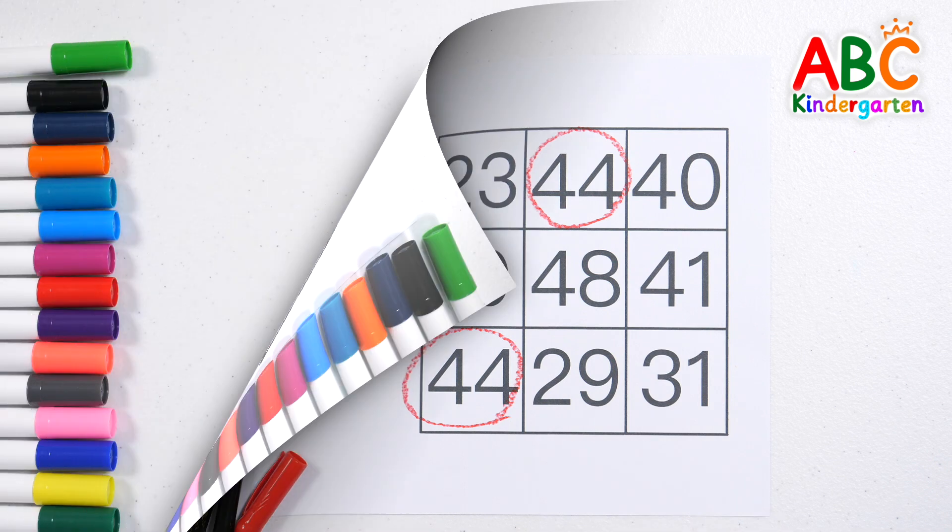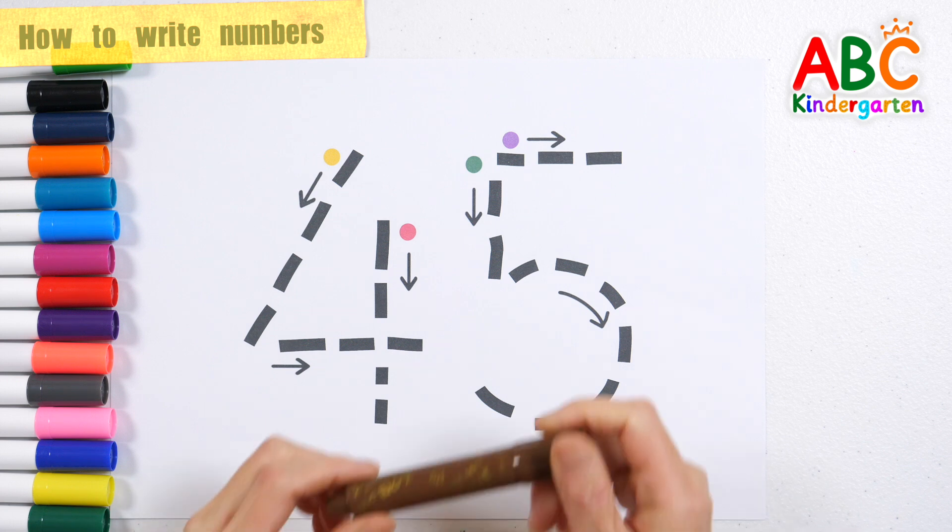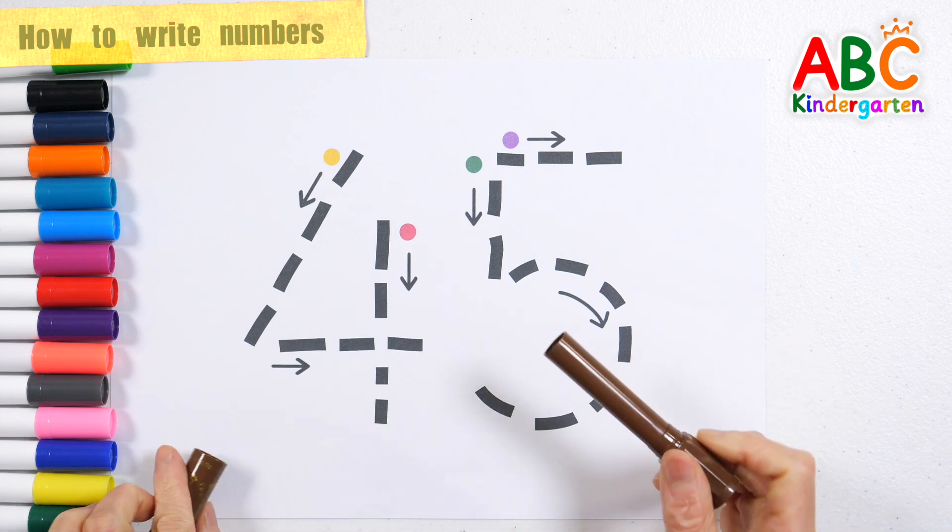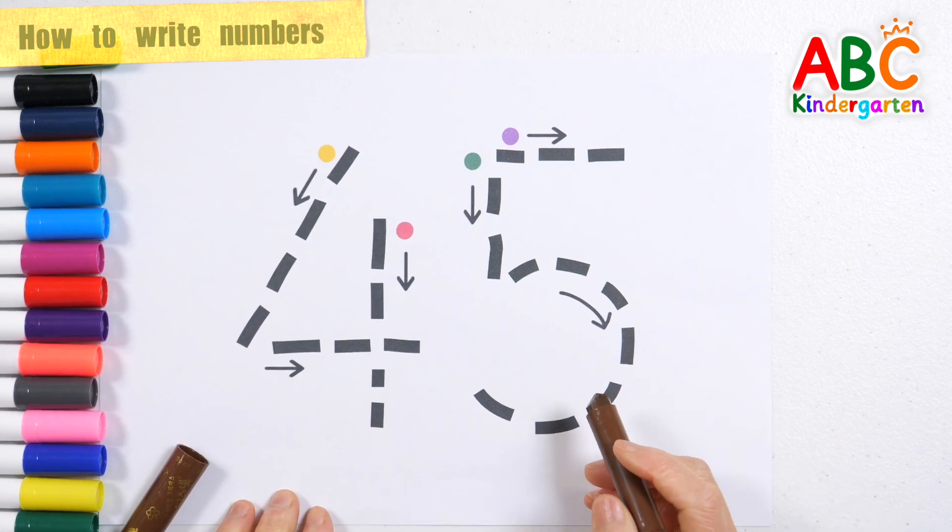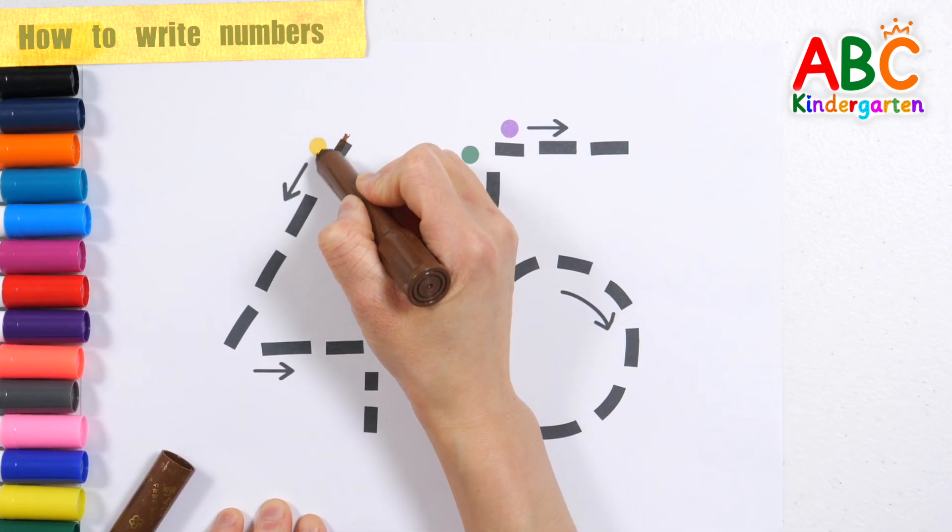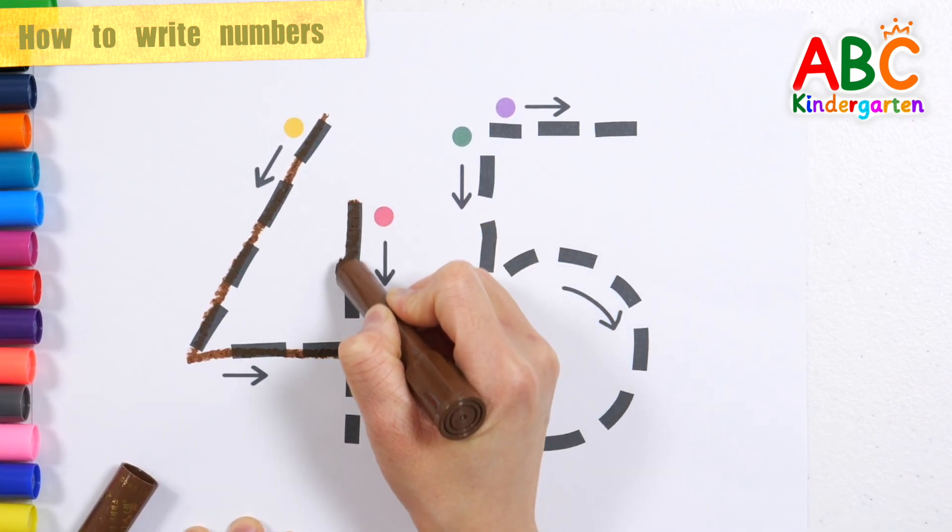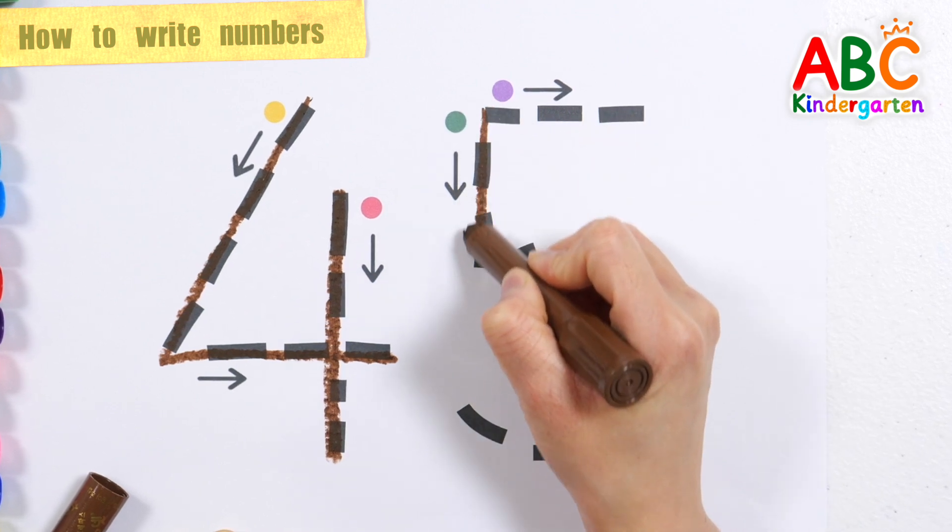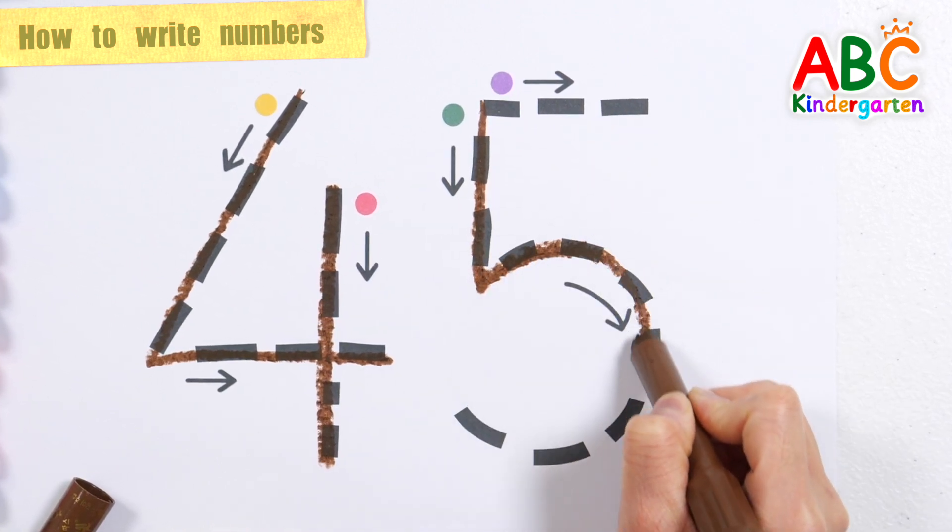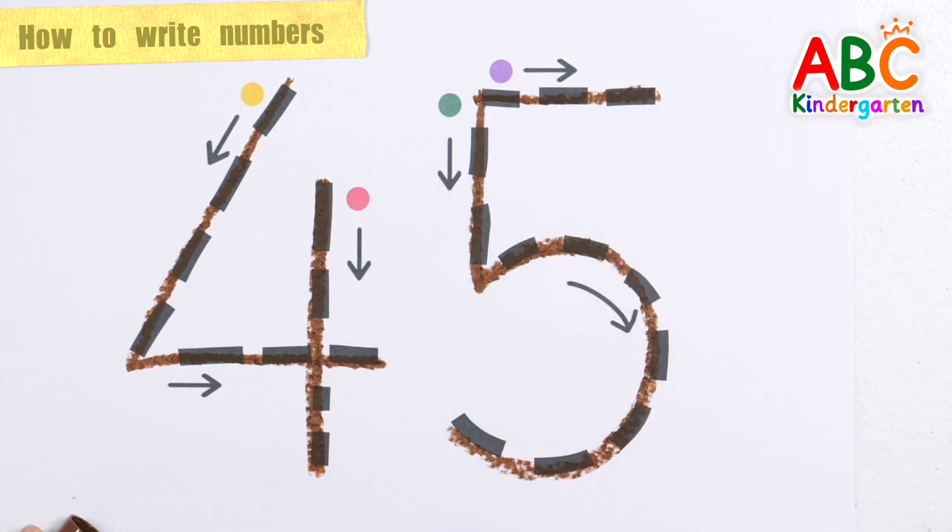Great job! Write the numbers in order. Write down the numbers following the arrows in the following order: Yellow, red, green, and purple. Forty-five.